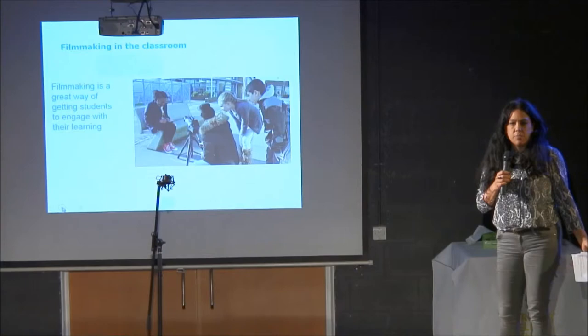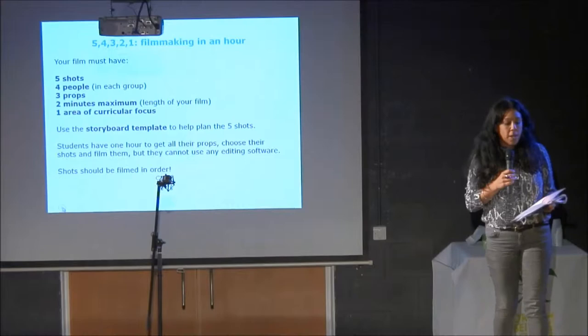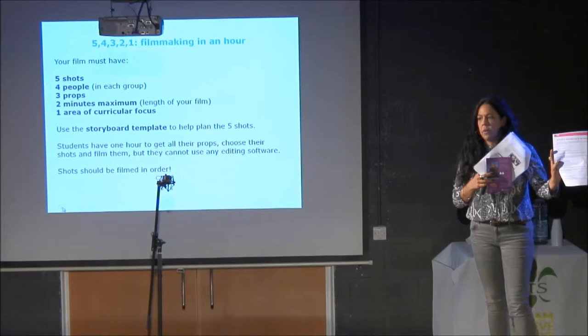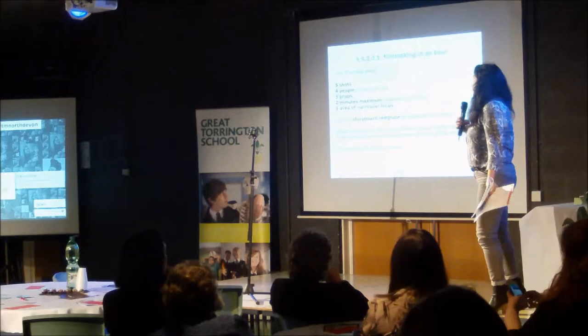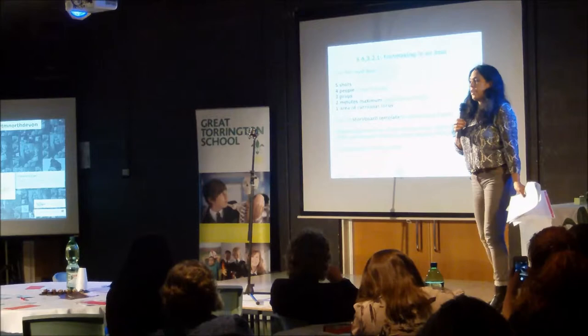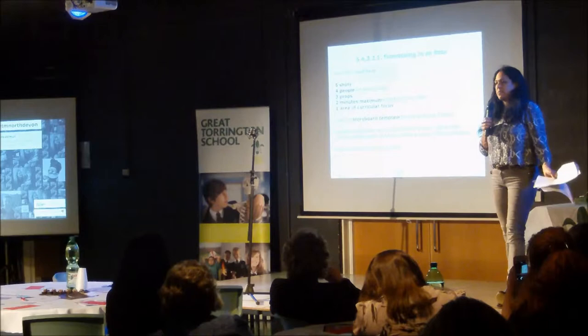I'm going to show you a very quick activity that some of you might or might not have heard of. I've put some sheets on the desk — it's called 54321. This is a quick sheet you can use in your classroom, or you can email me afterwards and I can send you the whole resource. 54321 basically consists of five shots. If they haven't learned about shot types, they can learn about them, and to elevate the learning they could use five specific shots from the major shot types.